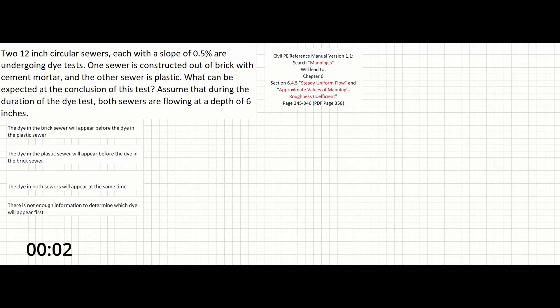Two circular sewers, each with a slope of 0.5%, are undergoing dye tests. One sewer is constructed out of brick with cement mortar, and the other sewer is plastic. What can be expected at the conclusion of this test? Assume that during the duration of the dye test, both sewers are flowing at a depth of 6 inches.